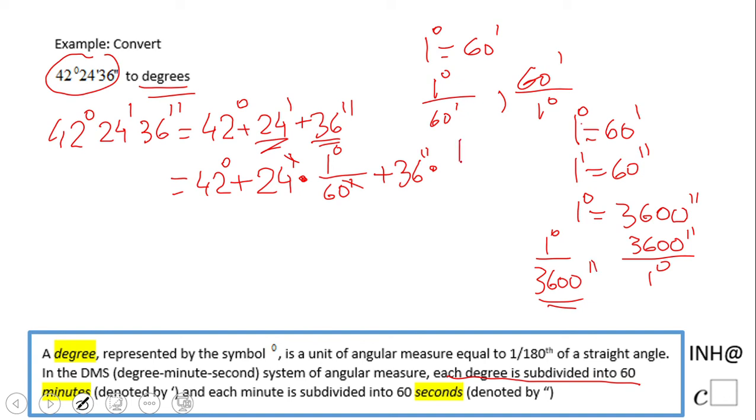have here is simple algebra. We have 42 plus 24 times 1/60 plus 36 times 1/3600. If you do all this math on a calculator, you're going to get 42.41 degrees, and that's it.